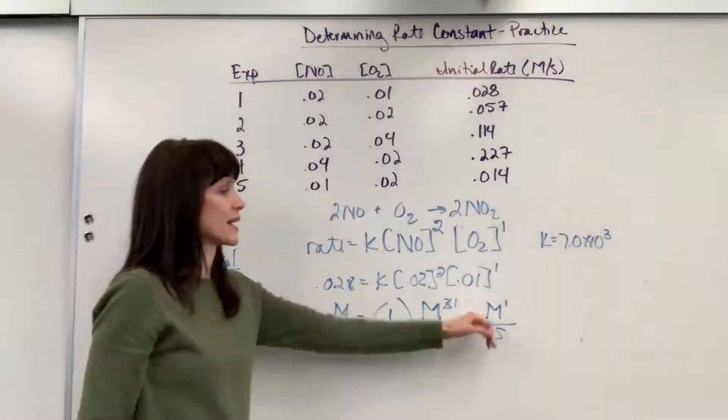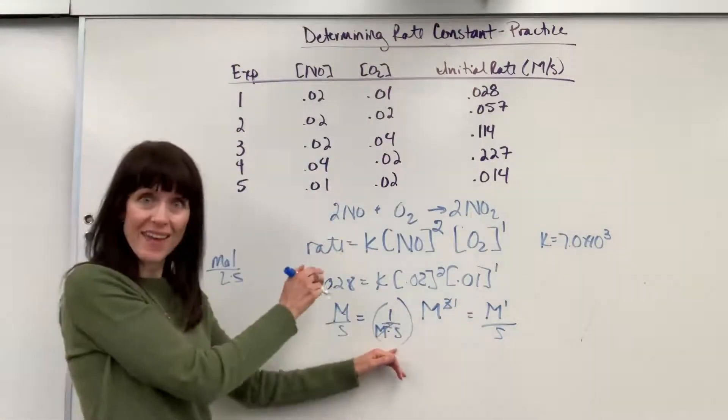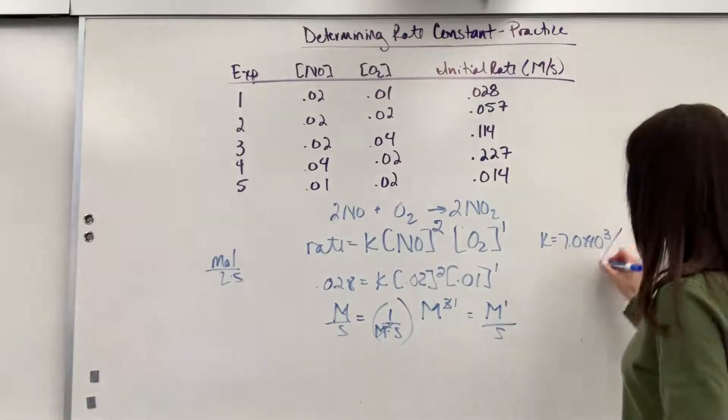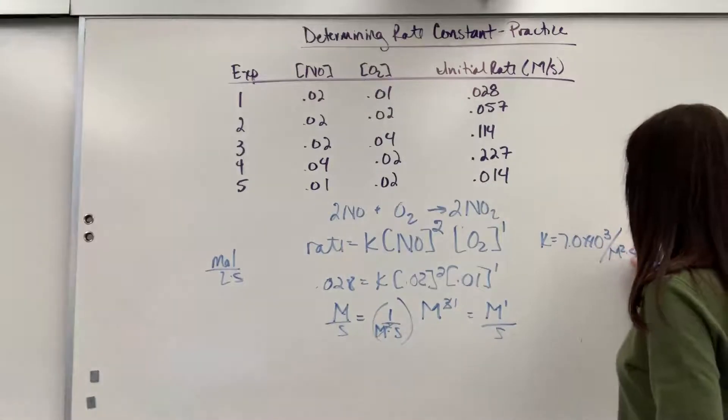There it is. Molarity per second. So the unit on K is going to be the 7.0 times 10 to the 3 per molarity squared times second.